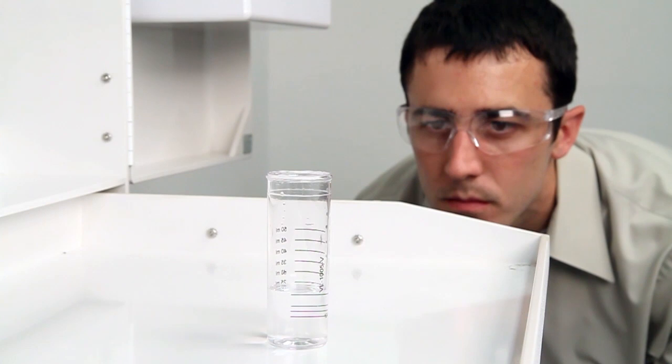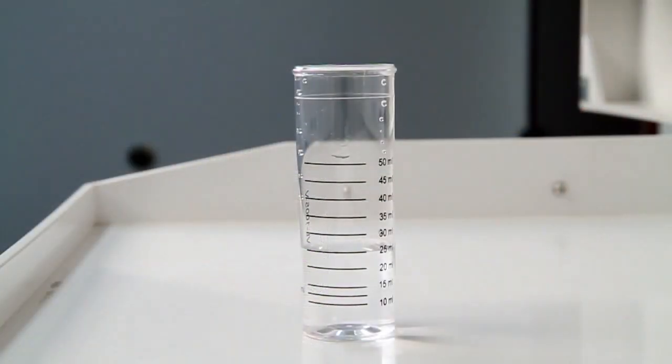When performing a drop count titration, a white background can provide contrast to better see the color changes. A cabinet tray or a white paper towel can provide that contrast.